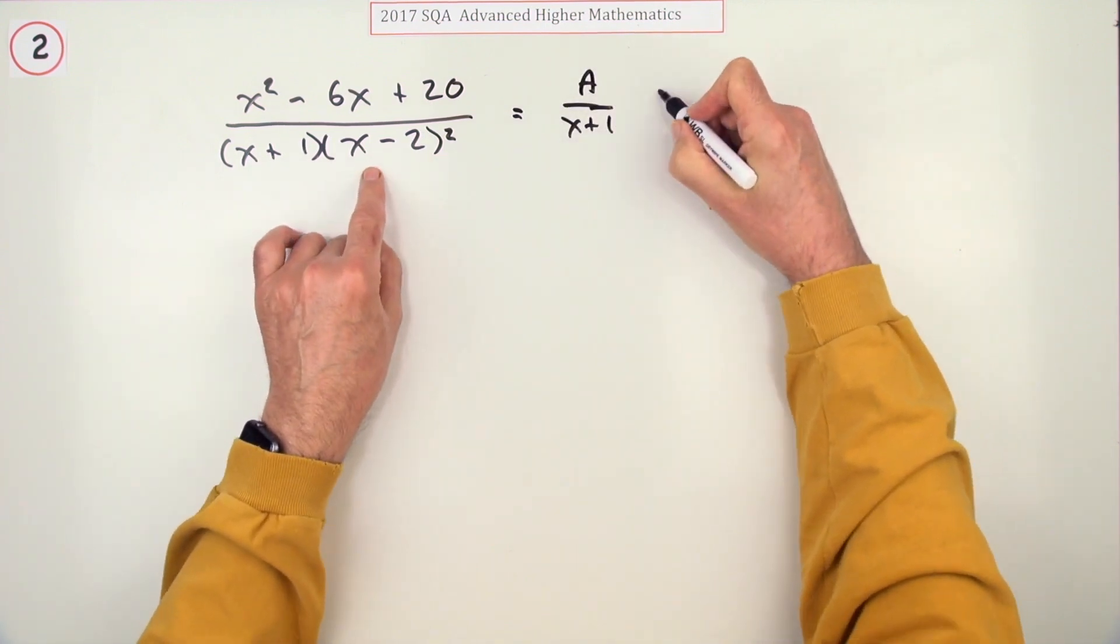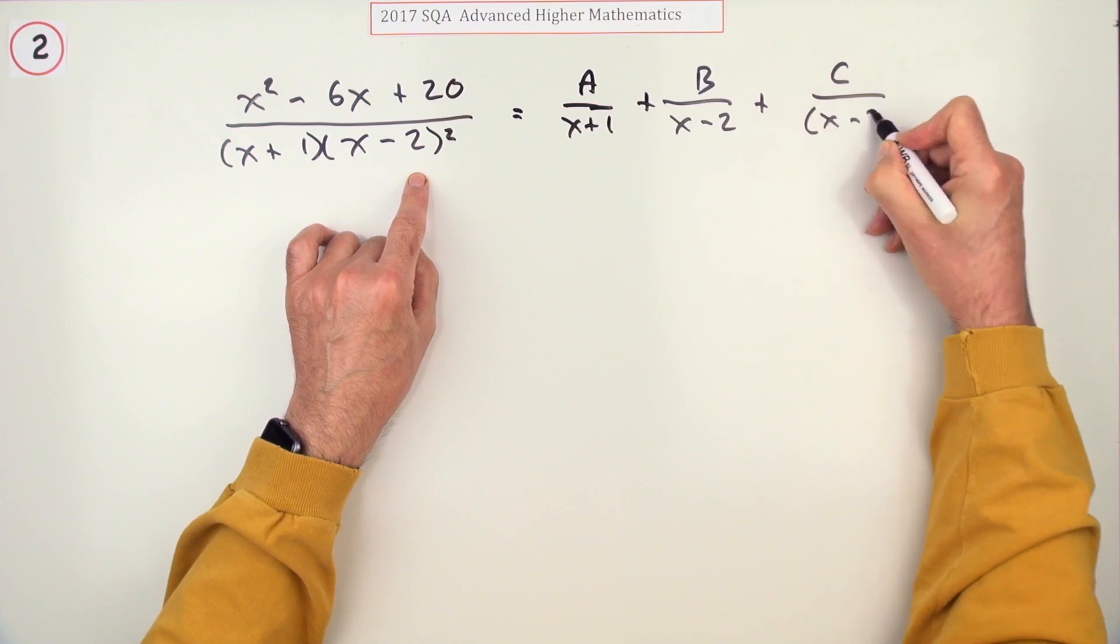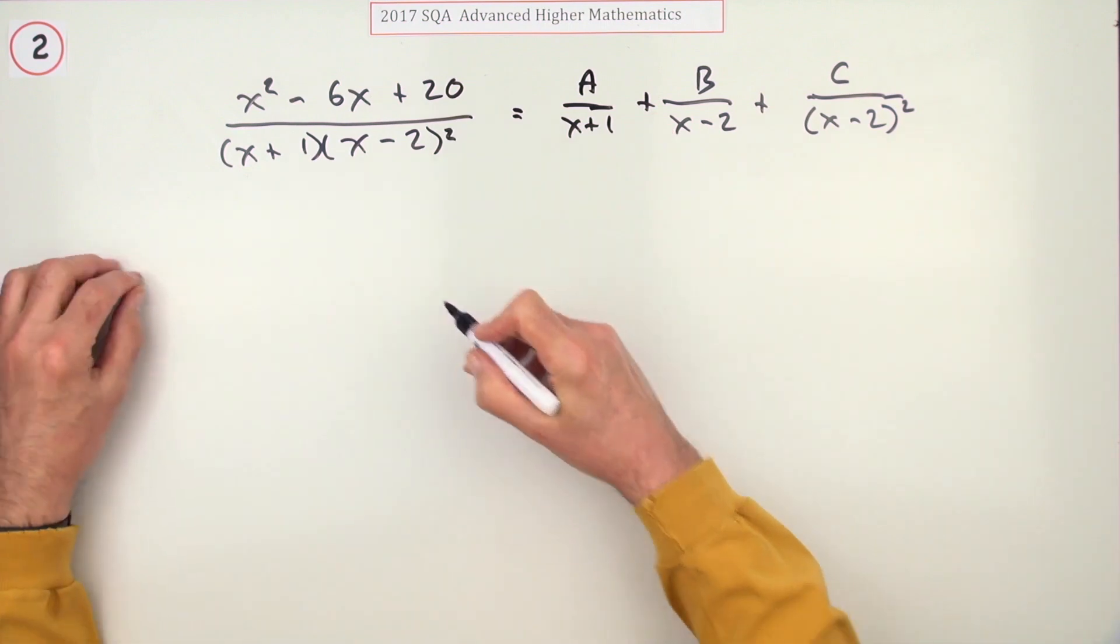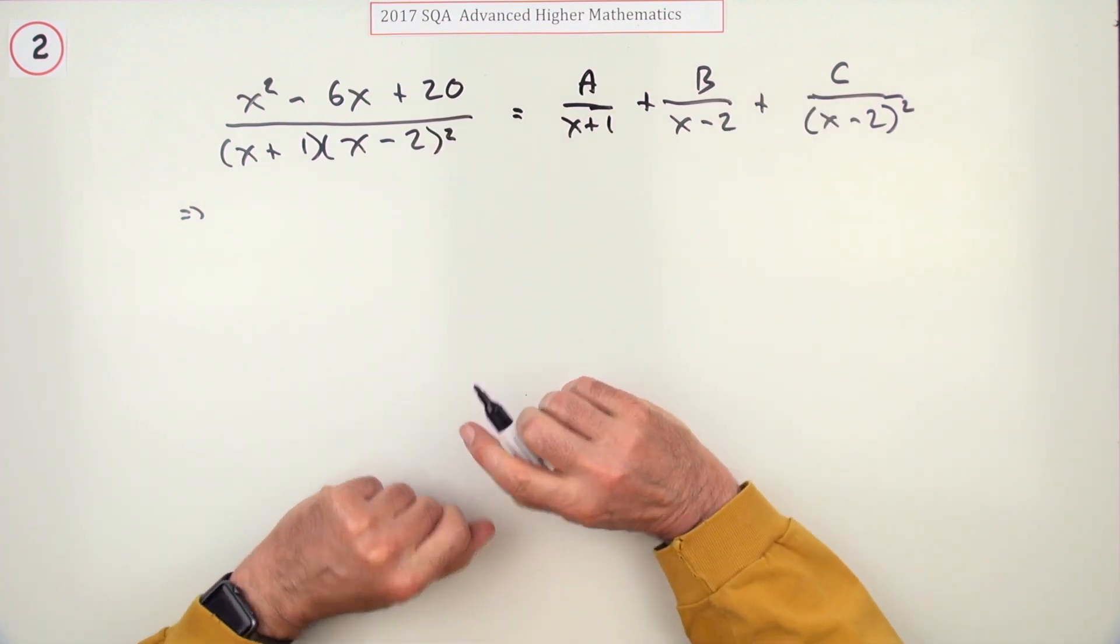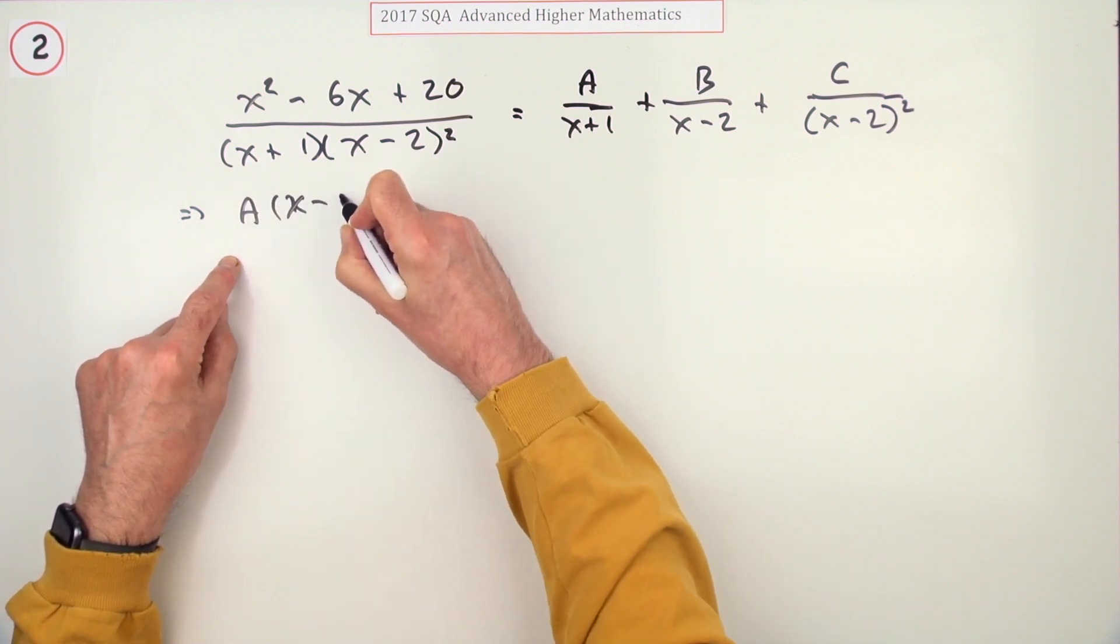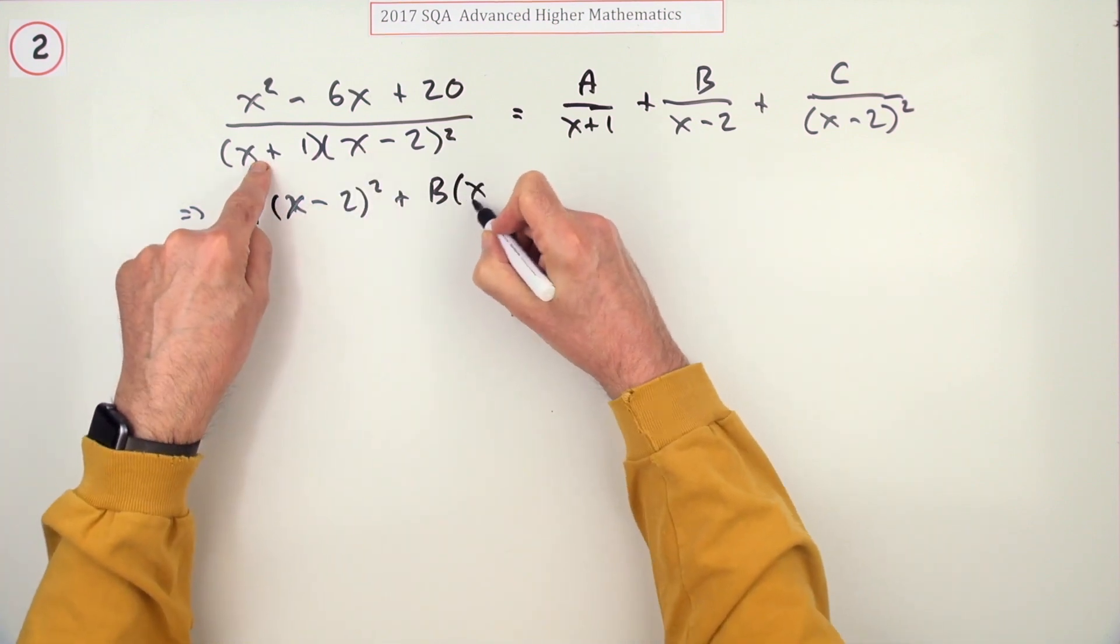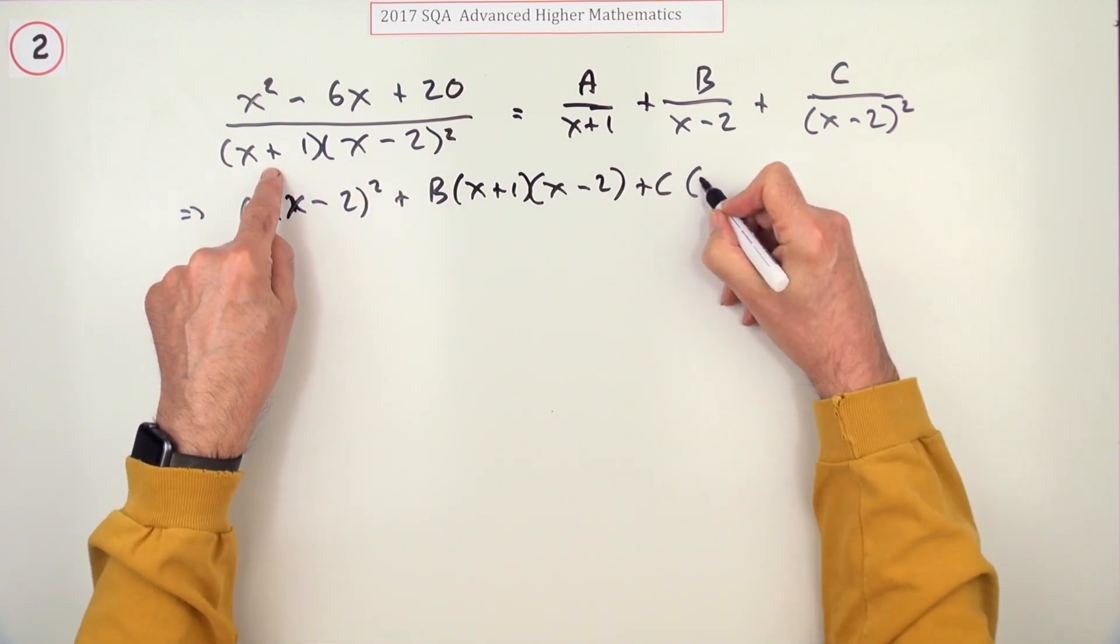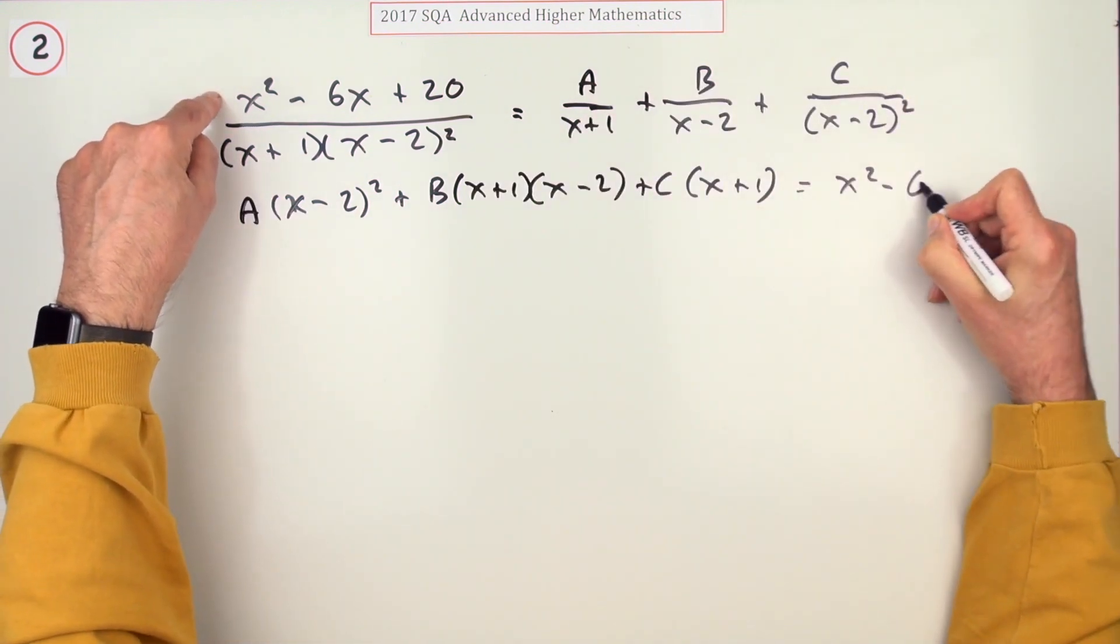A over (x+1), B over (x-2), but also C over the same again squared. That would be the first mark. Now multiplying it all out, multiplying throughout by this, A's got that already, so A's going to need (x-2)². B's got one of those so it still needs this one and one of those. C's got both of them so it just needs (x+1). Multiplying this side of course just leaves you with the numerator.